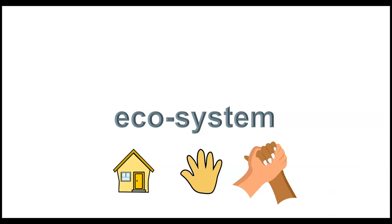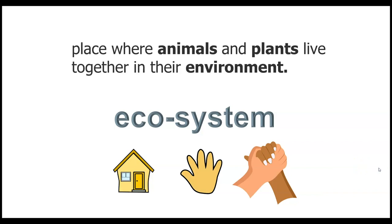Take your hands and your fingers, wave them together and put them together — that's a system; it works together. The definition of ecosystem is a place where animals and plants live together in their environment. What part represents eco? The environment — it's the home. And what are the parts of the environment? Yes, the animals and the plants.